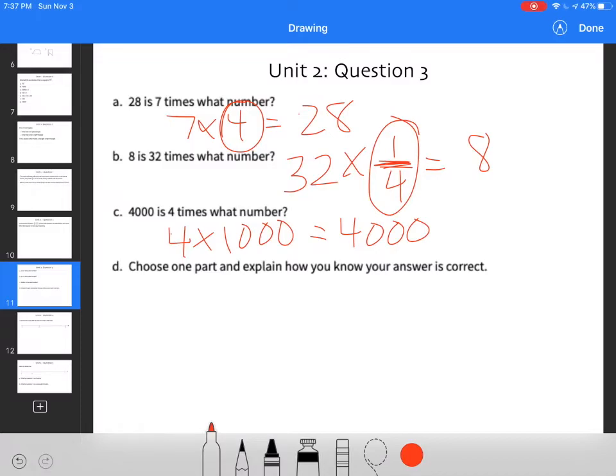Choose one part and explain how you know your answer is correct. I started with the second part, and I set it equal to the first. So you take the first part, and that's what it's equal to.